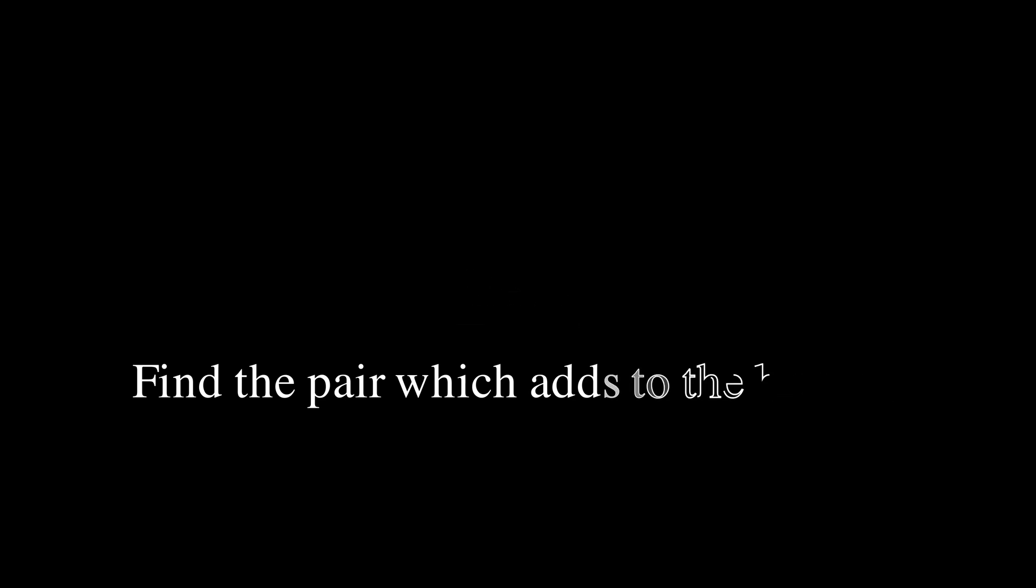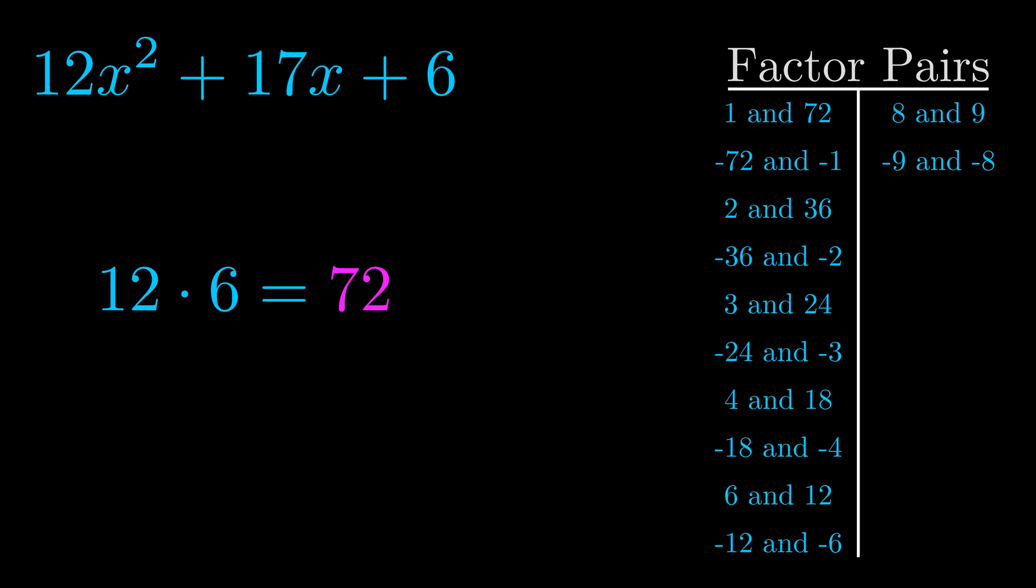The b value is the coefficient on the x term. That's the middle term, the one that we haven't done anything with yet. And really this is the only factor pair that we need.